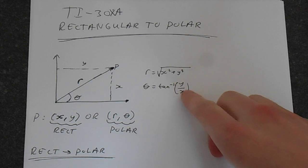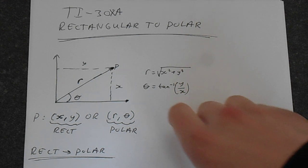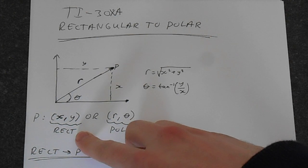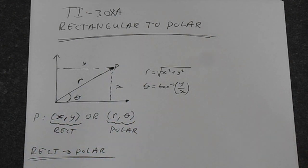and theta is inverse tan of y over x. So you can specify the number as x, y, that's your rectangular form, or r and theta, which is your polar form.